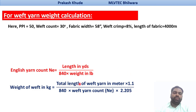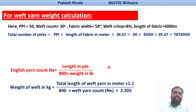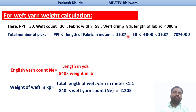Now we need to know the total length of weft yarns. Before that we need to know the total number of picks. The total number of picks is equal to picks per inch multiplied by the total length of the fabric. We multiply by 39.37 to convert meters to inches. So that gives us the total number of picks inserted for the production of this fabric.